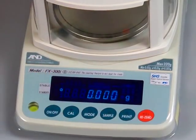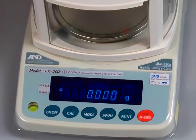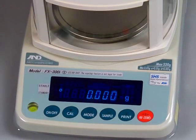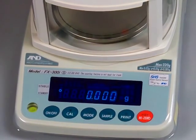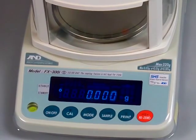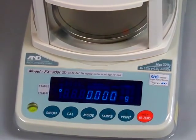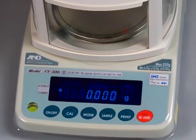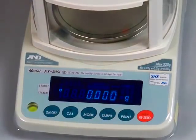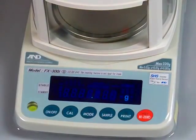You also have a print button. This print button would be used if you had the scale connected to the optional A&D printer or if you were connecting it to a PC and you wanted to do some data acquisition. And then we have the tare button, which is an orange red color, so someone can easily notice it to zero out the balance.